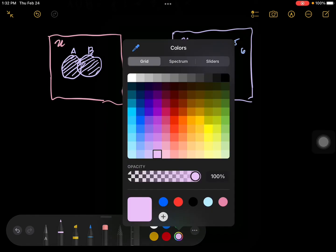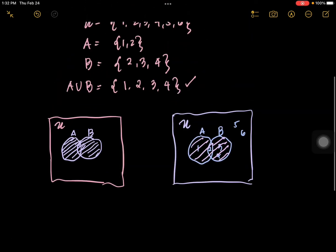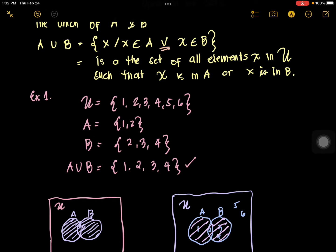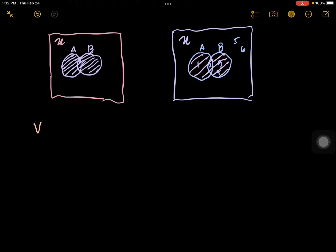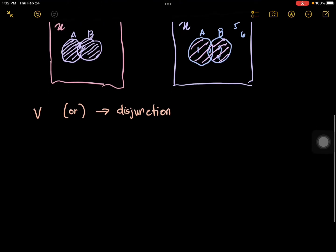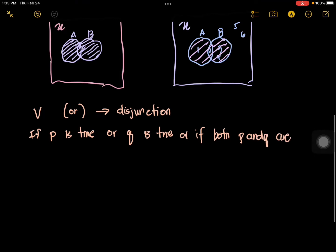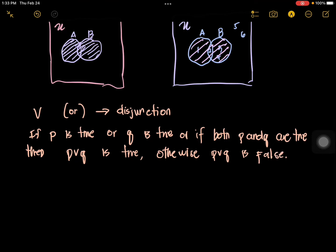Now, to elaborate further — this union symbol is simply read as OR. This is disjunction. What does it mean when you say disjunction? If P is true, or Q is true, or if both P and Q are true, then P or Q is true. Otherwise, P or Q is false.